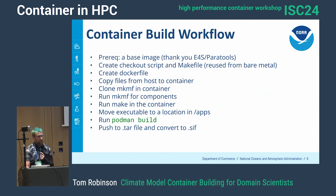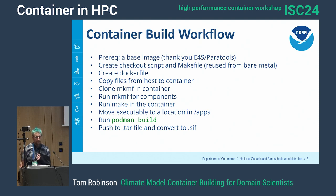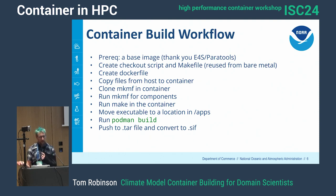We've gotten a base image from the E4S project, which has been very helpful — it has all of the packages we need to create climate and weather models. We're still creating a checkout script and make files the same way for both building on the bare metal system and in the Dockerfile; we just copy those files into the Dockerfile. It basically generates the Dockerfile for users from a template. Then we're using Podman to build, we archive the OCI image, and we create a SIF file from that to run the container. That's the workflow we've started to use.